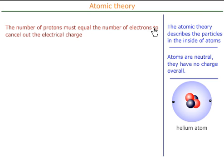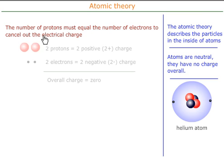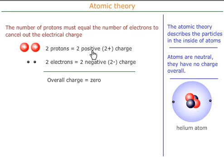The number of protons must always equal the number of electrons to cancel out the electrical charge. Two protons, two positives, two electrons, two negatives — overall charge is zero.